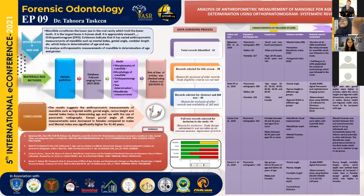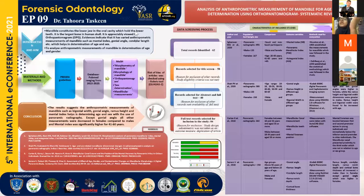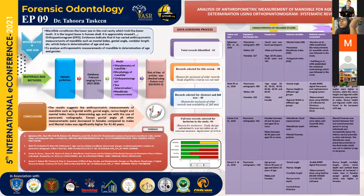The database used was PubMed, ranging from 2010 to 2020. The search terms taken into consideration were morphometry of the mandible, morphology of the mandible, orthopantomogram, sex determination, and mandibular measurements. We then assessed the risk of bias — essentially how true the result is relative to what it purports to be. Depending on the sample size and methodology, we gave a qualitative analysis of each study using the RoB tool.